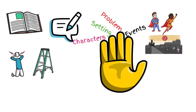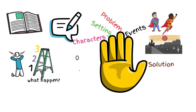The events in the story are the details about what happened. They can start from the beginning, middle, and end, and they are the most important details in the story. The last part is the solution — how did the main character solve the problem? What did he or she do to fix it?